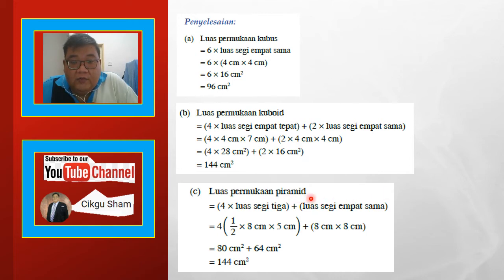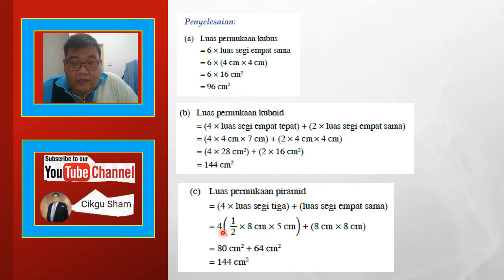Ini adalah luas permukaan piramid — 4 darab luas segi 3 tambah luas segi 4 sama (tapak dia). So, segi 3: setengah darab 8 darab 5, dan dia ada 4 segi 3 yang bentuk piramid tu. Selesaikan, dapat 144.